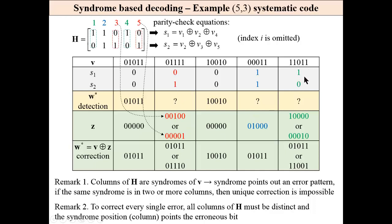And then correction is not unique. For this case, here, we have the same story, because we have syndrome one zero in two columns. So the unique correction is impossible. For this received word, we have a syndrome one one, which is only in column two, which means that we have an error in column two.